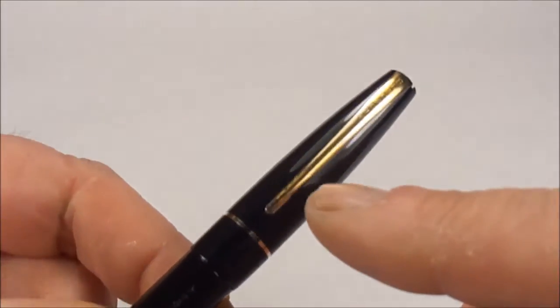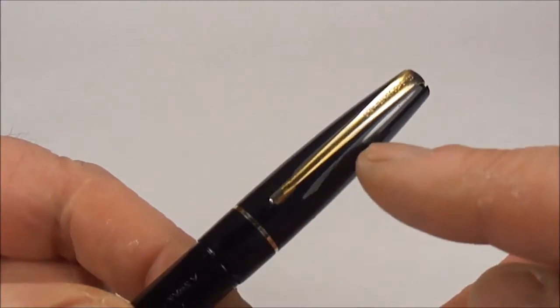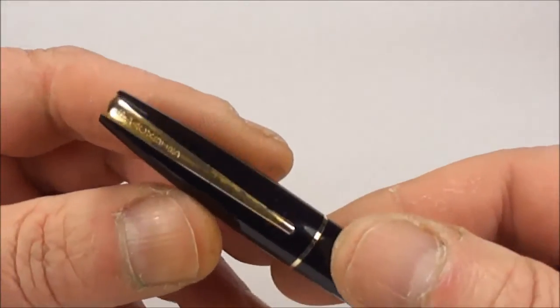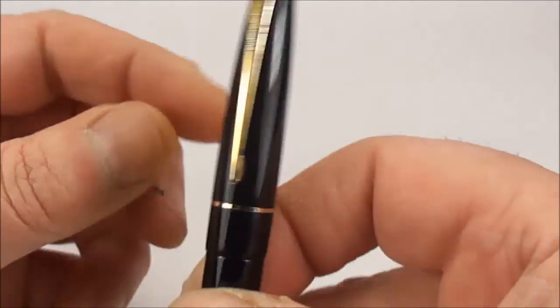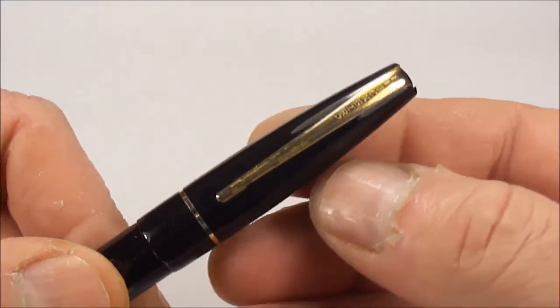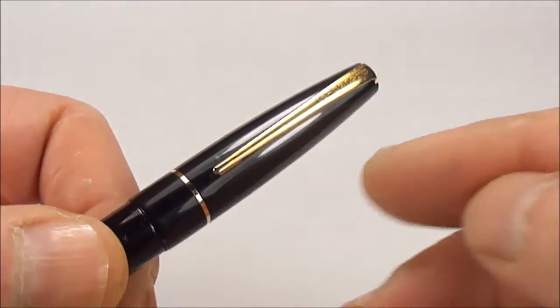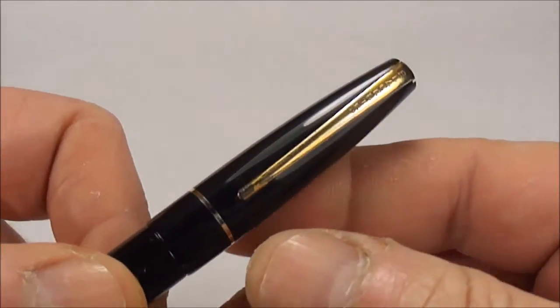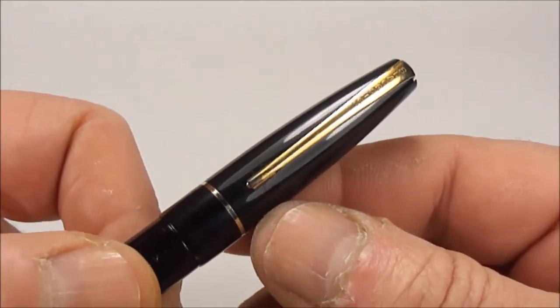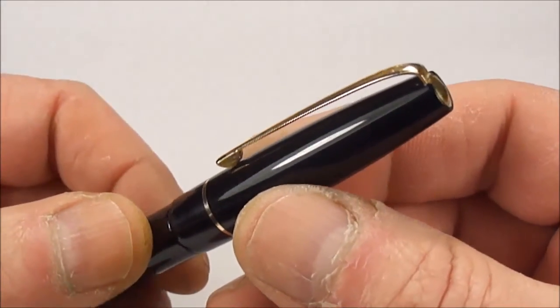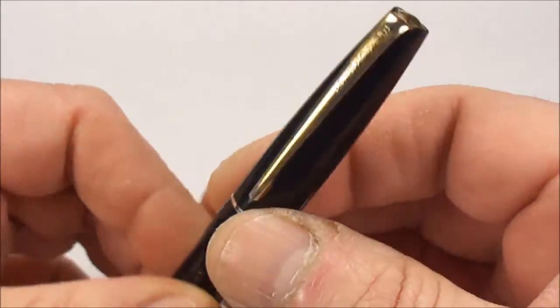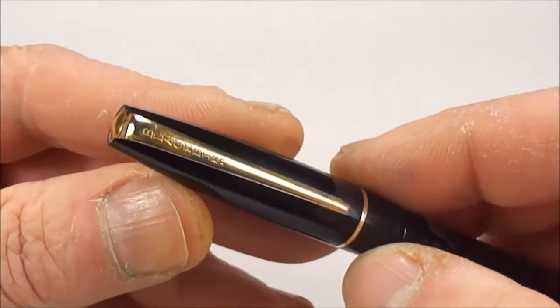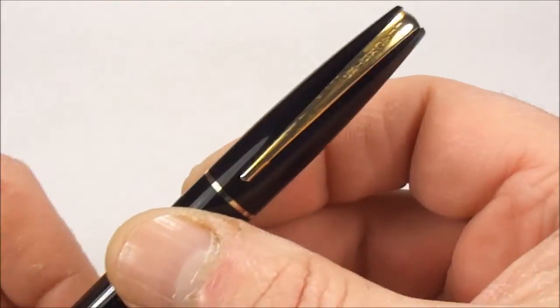The only downfall with these particular pens at the time were that the plating on the clip was more of a gold wash, and what you'll find is some of these pens in the wild, you'll find that the clip is like a chrome color because the gold wash is actually worn off. There's some slight wear to this particular one although I've seen worse examples.